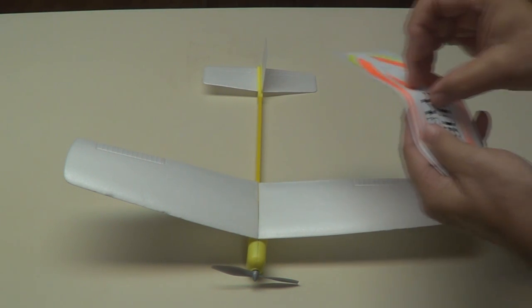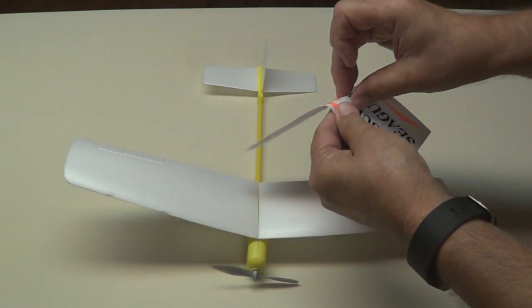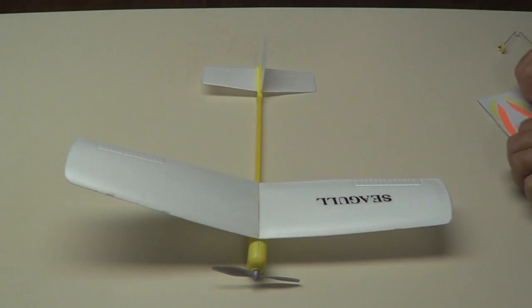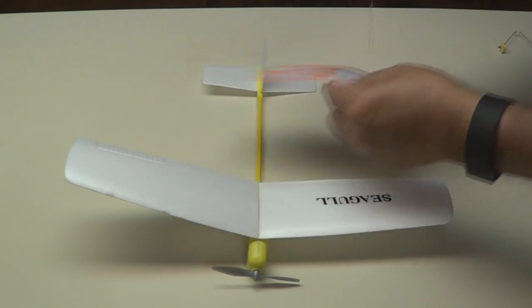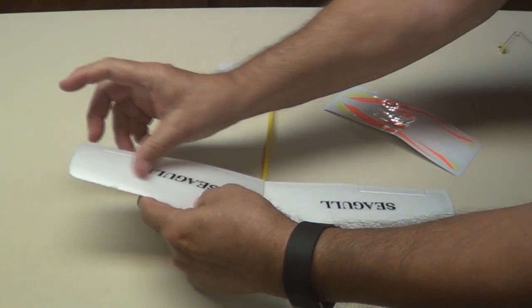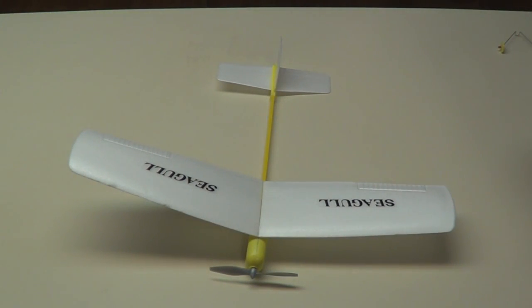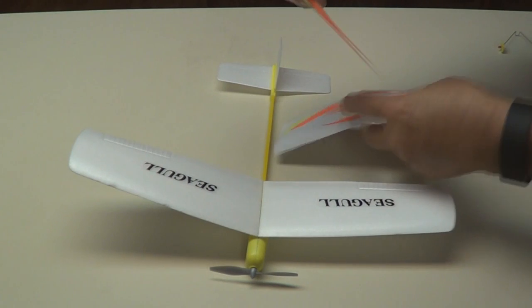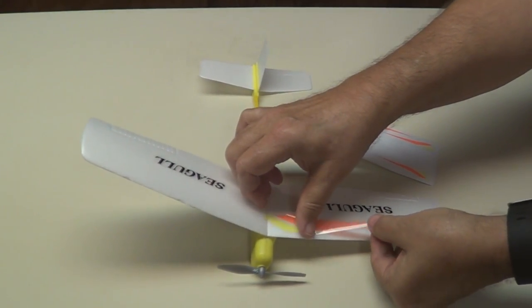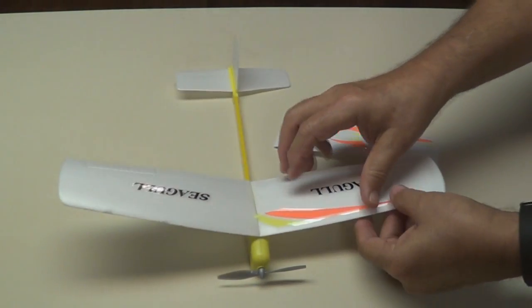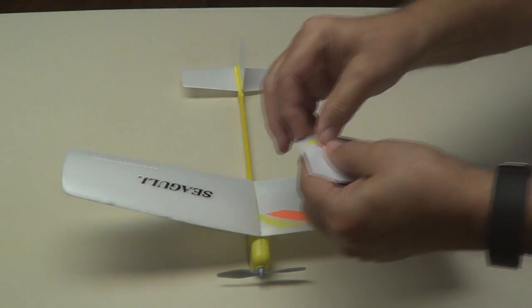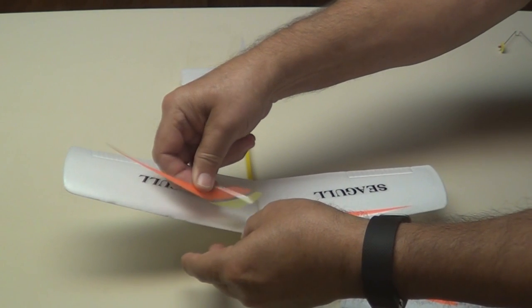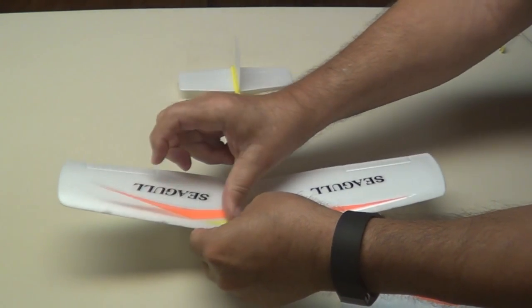Let's put the decals on the plane now, they just peel off and stick right on. Here's the name Seagull, it's right there. Stick it down. One on the other wing same way. These pieces go on the wing, you could turn them around, put them on either side, it's up to you. There's one side. There's the other side.